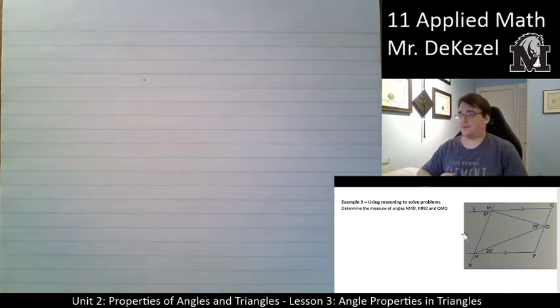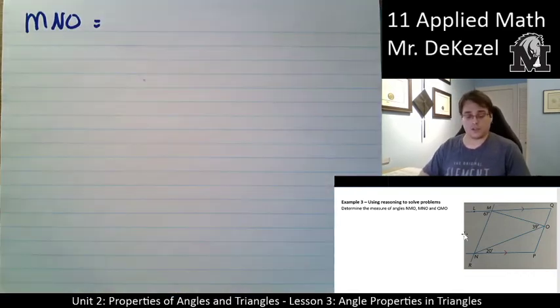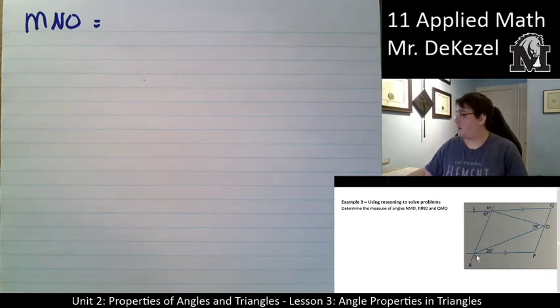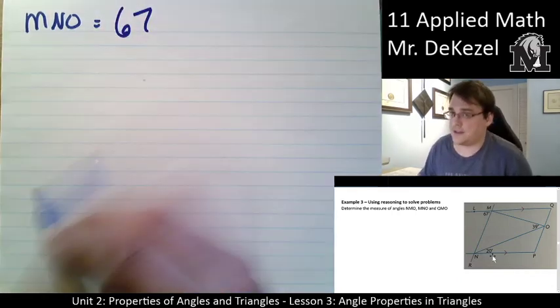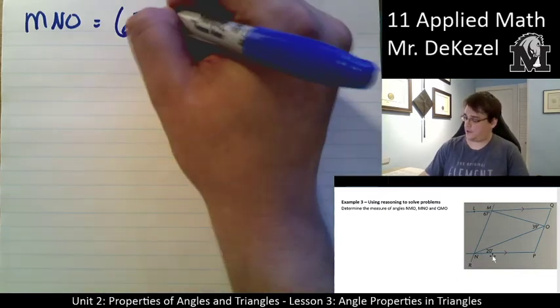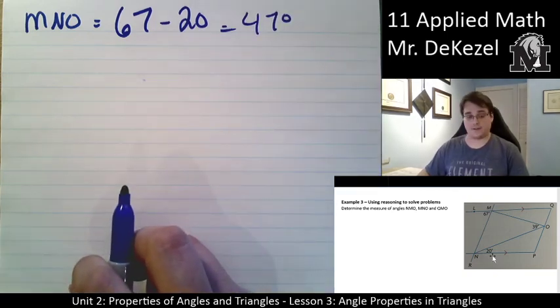So, use reasoning to solve this problem. Determine the measures angles of NMO, MNO, and QMO. Let's just write them down. MNO, so that's this angle right here. I've got this transversal. I know that these are interior alternate angles, right? This one right here, we've got 67, and this large one, that includes 20. So I can find out what this smaller angle is right here. If I take 67, which should be this, and subtract 20. So I'll take 67, as I know that it is an interior opposite angle, subtract 20, as that part is already taken, to get 47 degrees. So the angle MNO is 47 degrees.